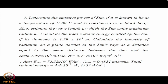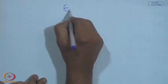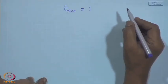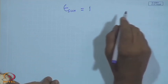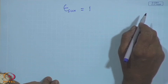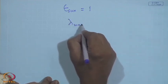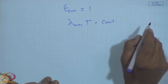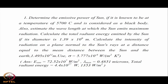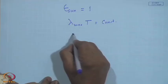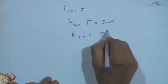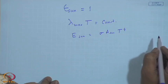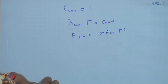We have a problem: determine the emissive power of the sun if it is at a temperature of 5700°C and is considered a blackbody, so emissivity is 1. Also estimate the wavelength at which the sun emits maximum radiation using Wien's displacement law: λ_max × T = constant. Then calculate the total radiant energy emitted by the sun: E_sun = σ × A_sun × T⁴, using diameter 1.39 × 10⁹ m and temperature 5700°C.